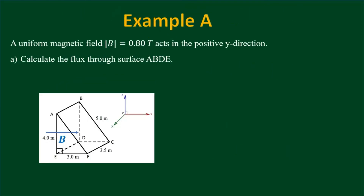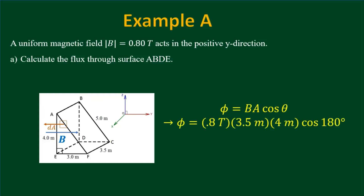Example A: A uniform magnetic field of 0.8 teslas acts in the positive y direction (to the right). Find the flux through surface ABDE. The area vector points perpendicularly outward from that surface, but here B and the area vector are in opposite directions, so theta is 180 degrees. Using Φ = BA cosine θ, we get 0.8 × (3.5 × 4) × cosine(180°), which gives a negative flux of −11.2 Webers.